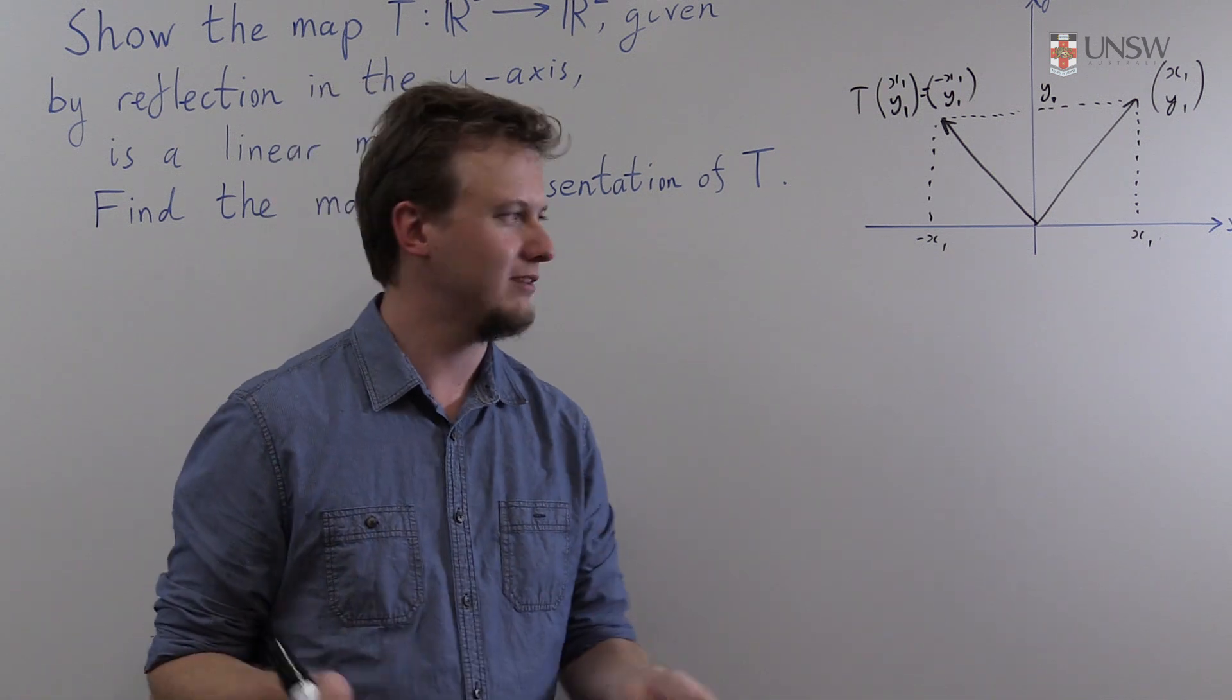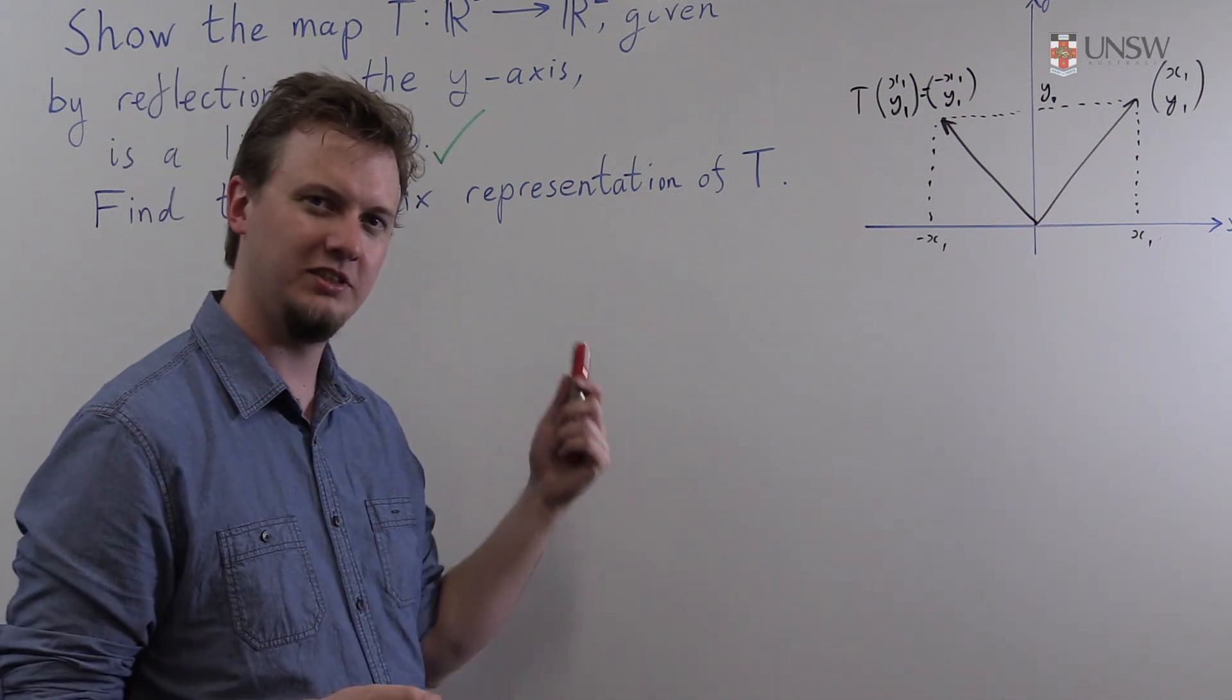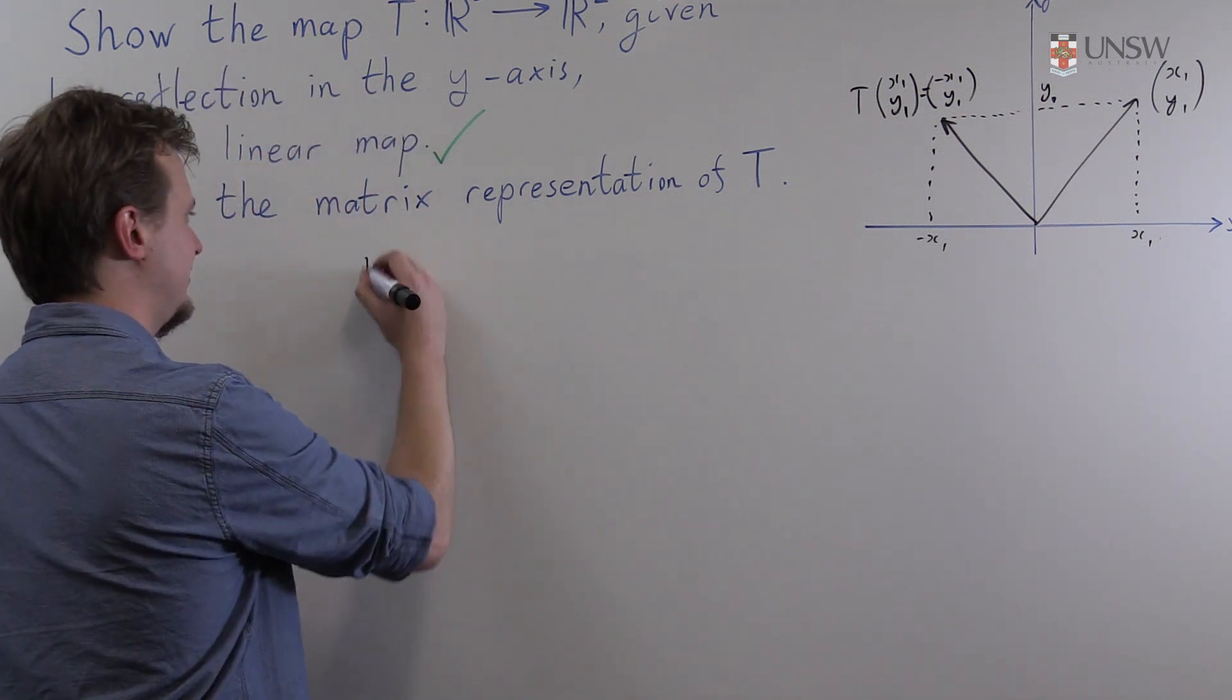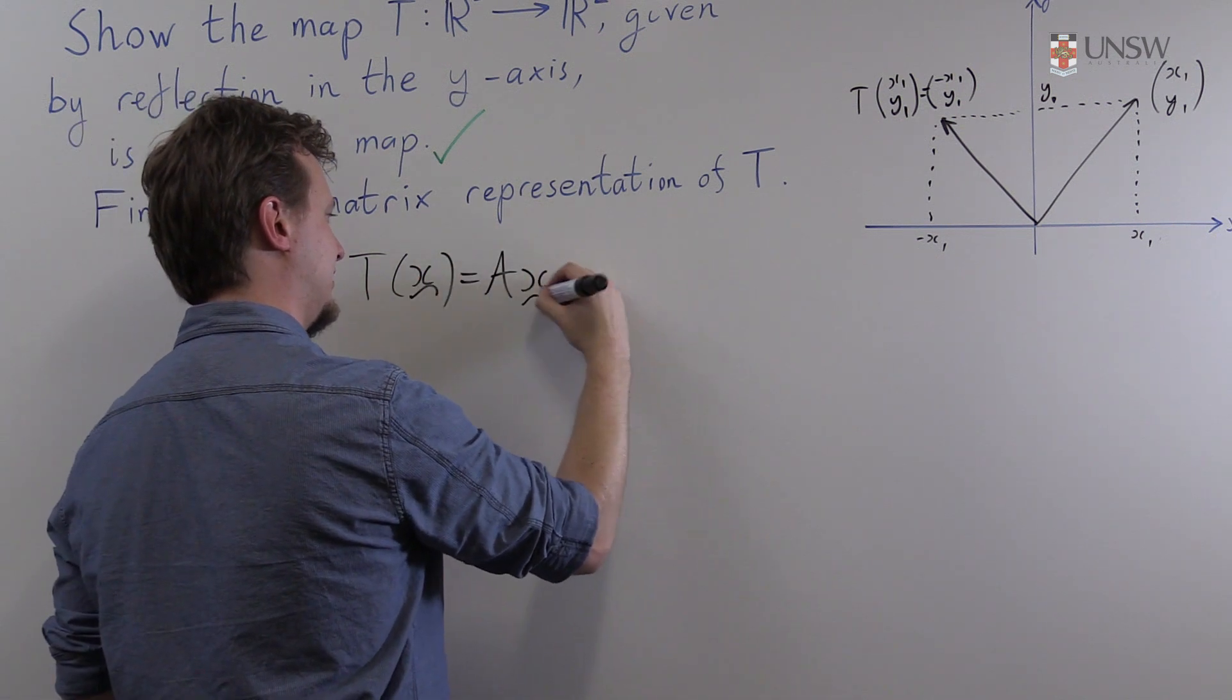So the first question we probably want to ask ourselves is well what is the matrix representation of T? Well the matrix representation of T is a matrix A such that T(x) is equal to Ax.